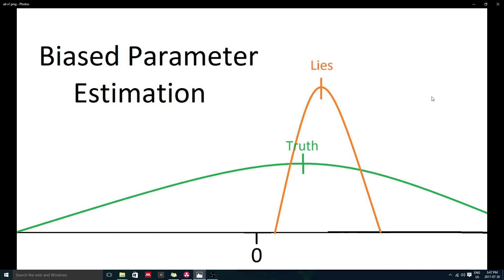Biased estimation can be very useful when faced with a high degree of multicollinearity. If you aren't familiar with the term, multicollinearity just means that the independent variables in your regression model are highly correlated with one another.